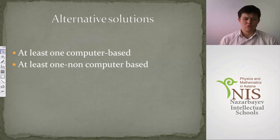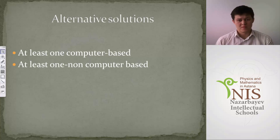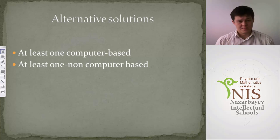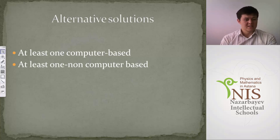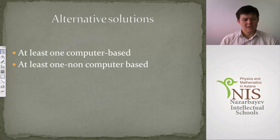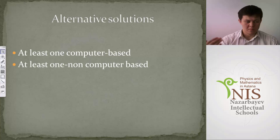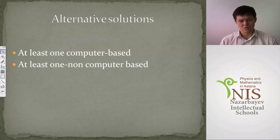Next we have alternative solutions. Looking at a coursework example, we considered three different alternative solutions. The suggestion is to try to use at least one computer-based solution and at least one non-computer-based solution. You need to discuss all possible alternative solutions with your client — this structure is a good suggestion that will give you more marks.